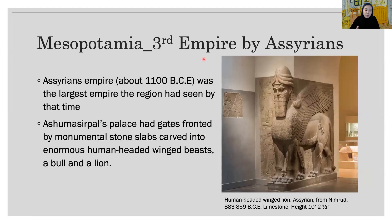The third ancient empire in Mesopotamia was Assyria. The Assyrians had been gathering power and territory since before 1100 BCE, and their military strength increased significantly under Ashurnasirpal II. It was the largest empire the region had seen by that time. Ashurnasirpal's palace had gates fronted by monumental stone slabs carved into enormous human-headed winged beasts — a bull and a lion.